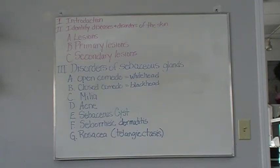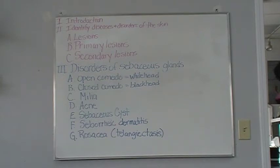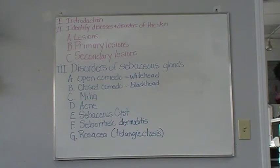Seborrheic dermatitis is a skin condition caused by an inflammation of the sebaceous glands, often characterized by inflammation, dry or oily scaling, or crusting and/or itchiness. Red, flaky skin often appears in the eyebrows, in the scalp and hairline, in the middle of the forehead, or along the sides of the nose. A dermatologist will prescribe topical antifungal medications. In the salon, a non-fatty skin care product designed for sensitive skin can be used.